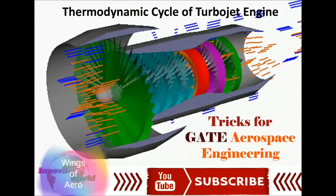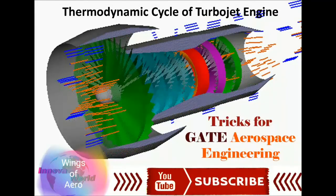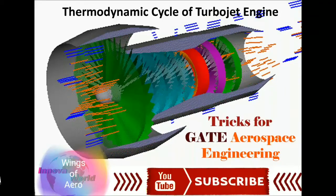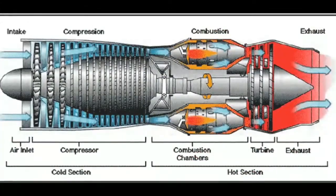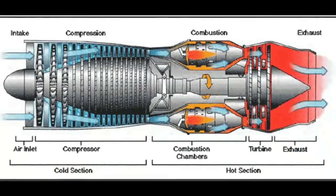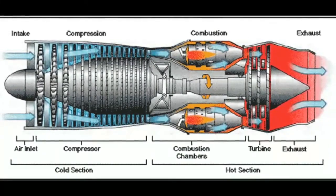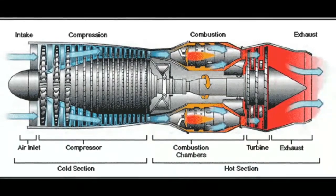This tutorial is about the thermodynamic cycle for a turbojet engine. You will learn tricks to easily memorize the efficiency formula for various components in the turbojet engine. The turbojet engine can be classified into five sections: inlet, compressor, combustion chamber, turbine, and exhaust or nozzle.